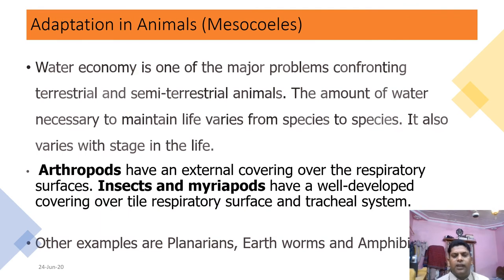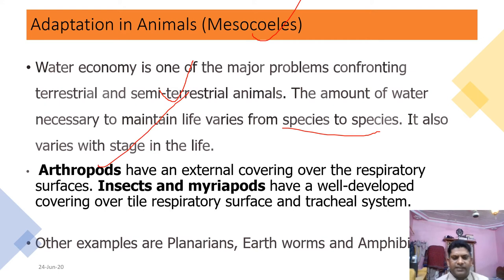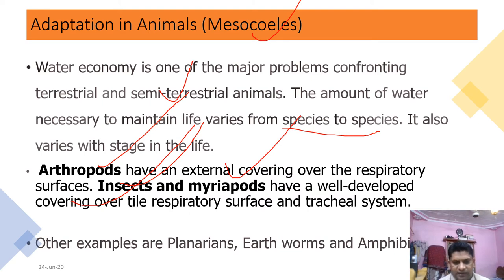The second category of animals is mesoseals. Mesoseals require a medium level of water for survival — neither fully terrestrial nor requiring too much water. Their water requirement varies from species to species. Arthropods, for example, have an external covering over the respiratory surface, which helps them not lose too much water. Insects and mites develop coverings over the respiratory surface via tracheal systems. This category also includes flatworms, earthworms, and amphibians, which conserve what they need but require only a little water.